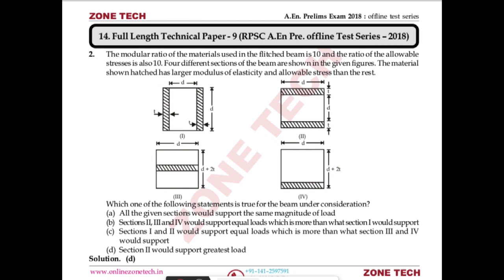The hatched portion has a modulus of elasticity 10 times greater than the other portion — modular ratio value is 10. The question asks which of the four sections is the most efficient, i.e., which section will resist the greatest stress.